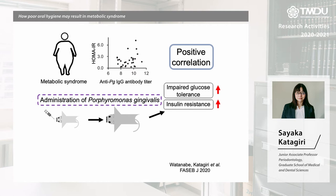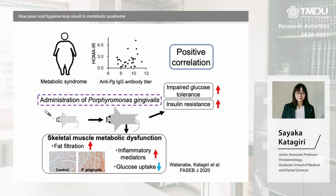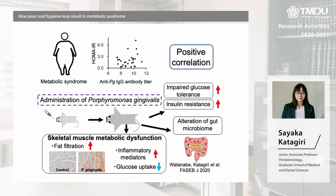Mice fed a high-fat diet and orally administered P. gingivalis showed increased insulin resistance, impaired glucose tolerance, and fat infiltration and lower glucose uptake in the skeletal muscle. Interestingly, the gut microbiome was significantly altered, which might decrease insulin sensitivity.